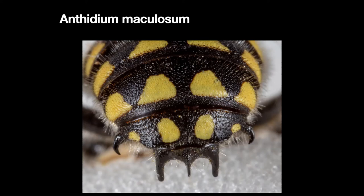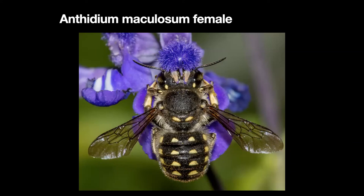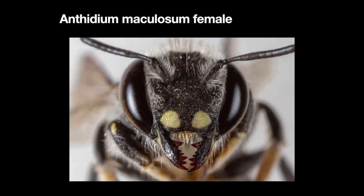Here's the female on a salvia. You could give this one a common name — they're wool carder bees, so you could say spotted wool carder bee. With her mandibles, she strips the tomentosum — the down-like material off of leaves — and makes a ball of that.